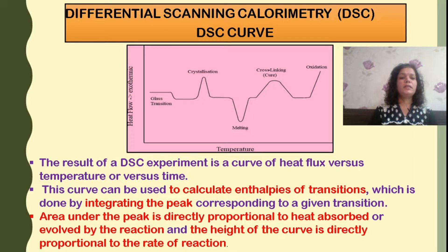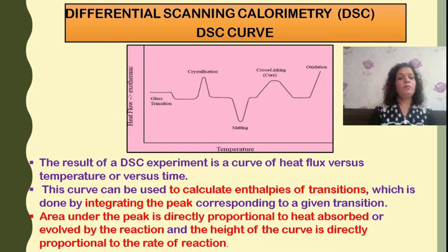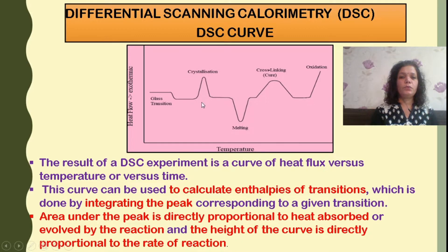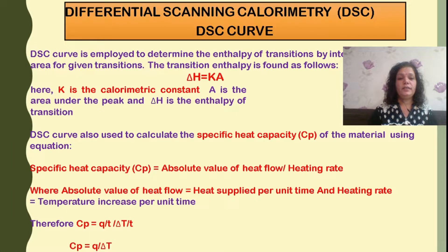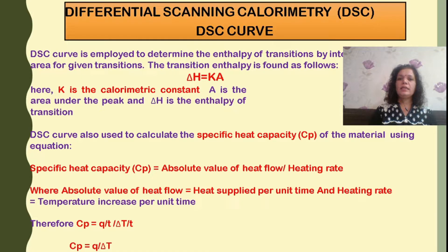This DSC curve of heat flux versus temperature or time shows different types of transitions for a polymer system. I can calculate the enthalpies of different transitions by integrating the peak corresponding to each transition. The area under the peak is directly proportional to the heat absorbed or evolved by the reaction, and the height of the curve is proportional to the rate of reaction. Using the equation delta H = K × A, where K is the calorimetric constant and A is the area under the peak, I can find the enthalpy of transition.